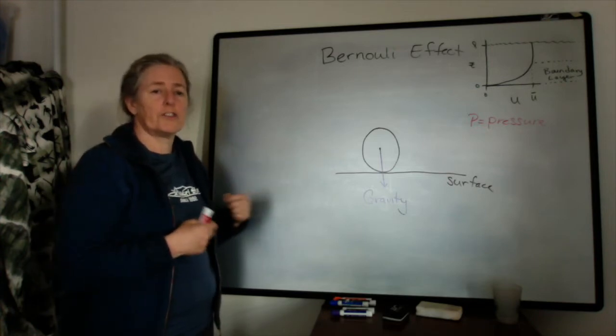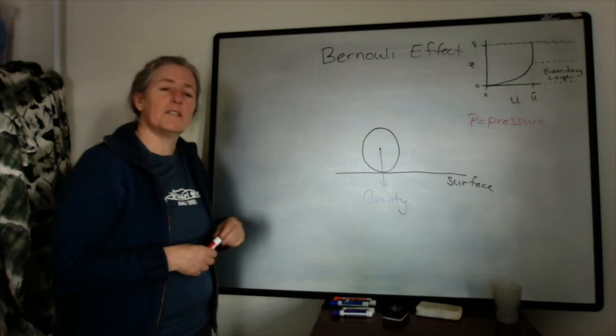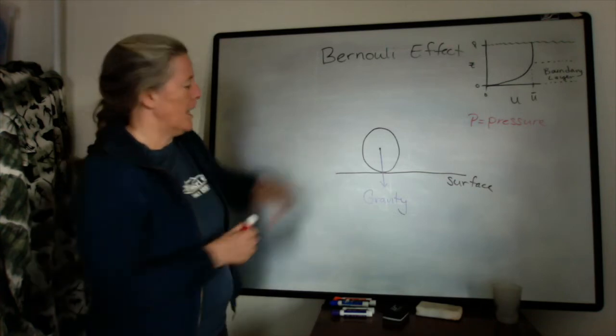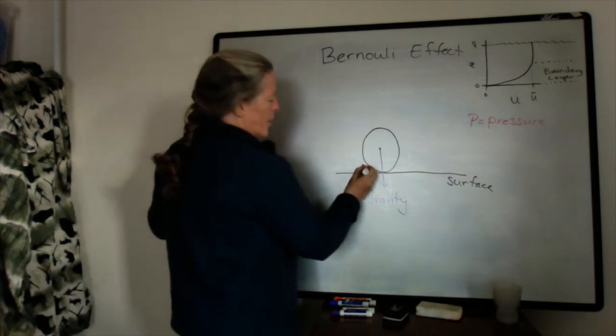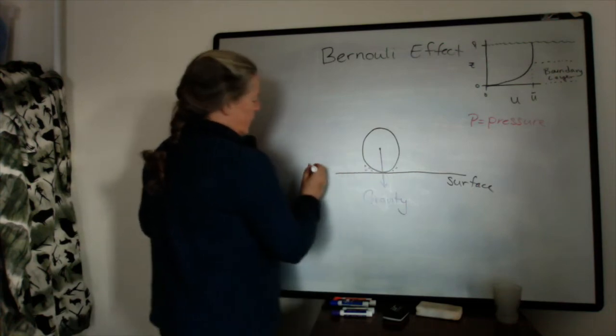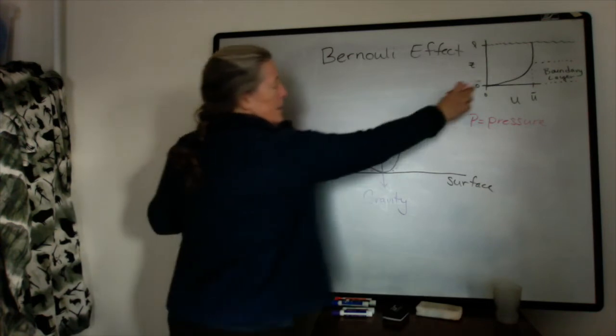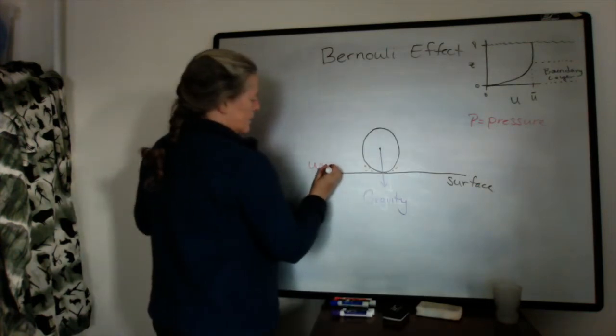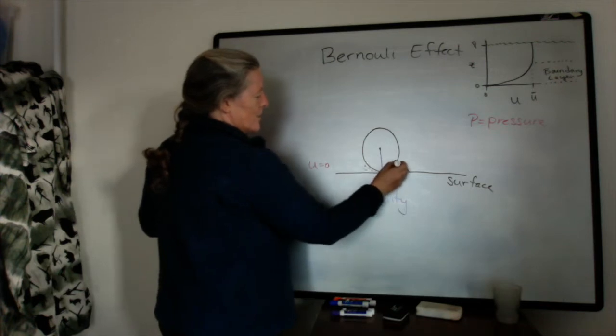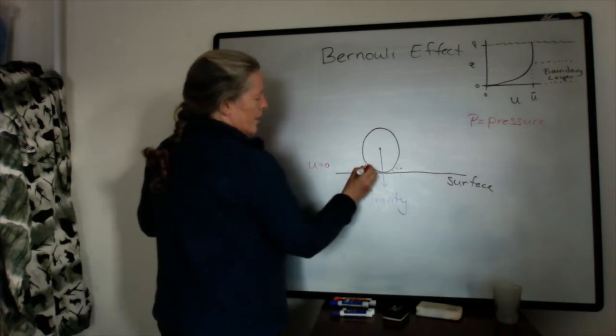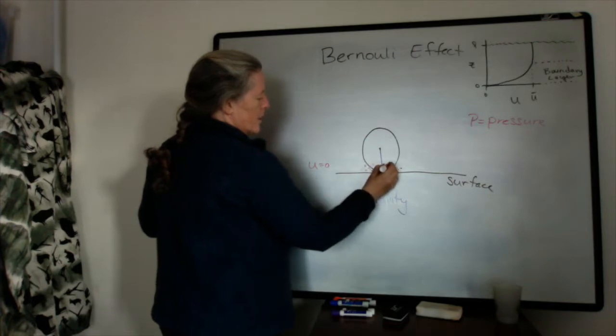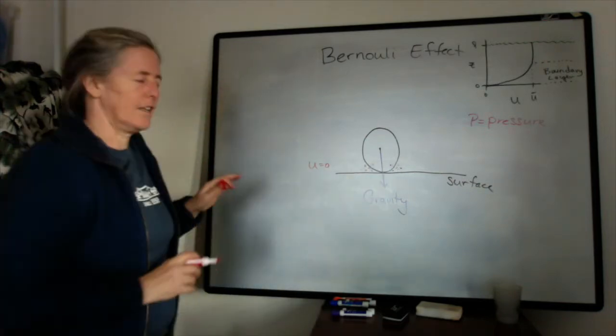those water molecules are jiggling, even when the flow speed is zero, and they're jiggling, and they're bumping up against the grain. And because our flow speed down near the bottom here is zero, the molecules are just jiggling in place, and you end up with a pressure that's pushing in on the grain.